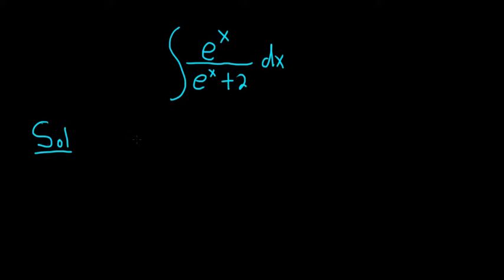So we'll start this problem by trying to make a u substitution. We'll let u be equal to e to the x plus 2. So if you let u be the bottom piece, things should work out pretty easily. Then taking the derivative, we get du. And the derivative of e to the x is e to the x. And the derivative of 2 is 0. So we just get e to the x dx.